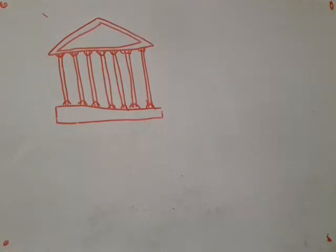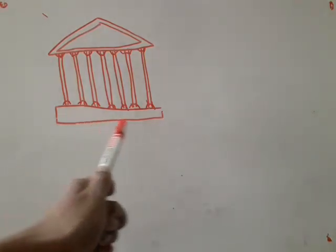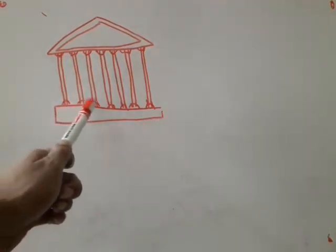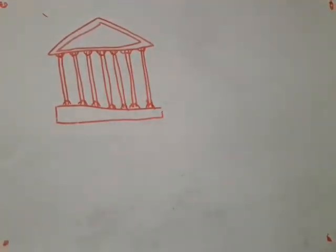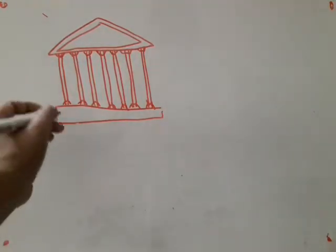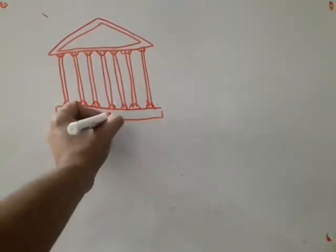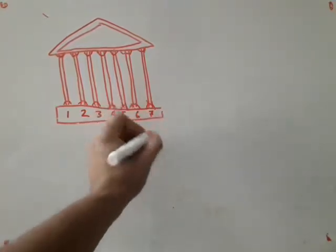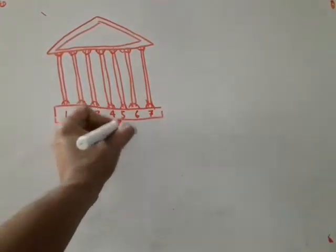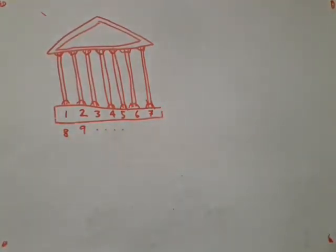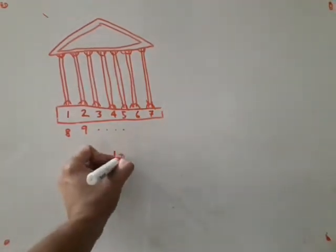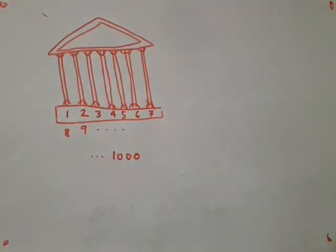Let us start with a story that is often attributed to Archimedes. It is said that Archimedes had two servants, and he was once very angry with them and gave them this punishment. He took them to a structure with 7 pillars, numbered 1 through 7, and asked them to count the pillars continuing as 8, 9, and so on. The servants were to count up to 1,000 and report to Archimedes which particular pillar the counting stopped on.